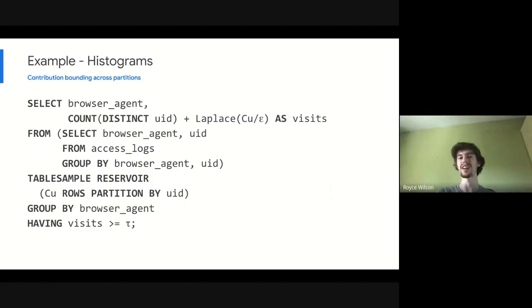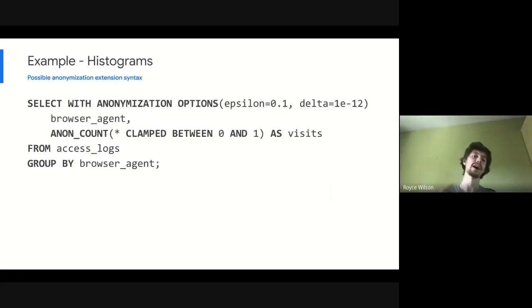But this is pretty unwieldy for an analyst to write. So we introduced this modified anonymized access syntax as a SQL extension. We have our privacy parameters embedded here with the with anonymization options clause. And then we're also introducing differentially private variants of SQL aggregation functions. In this example, anon count. And we're representing the contribution bounds there using these clamped between syntax.